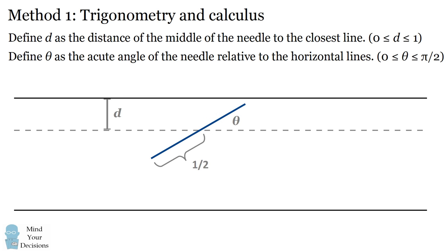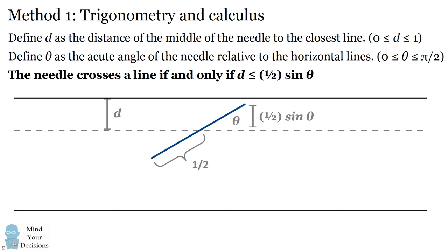We'll use a little trigonometry. Consider the vertical leg of the needle — the hypotenuse of the relevant right triangle is one half, because we have half the needle. We can compute this vertical leg as equaling one-half sine of theta. So the needle will cross the horizontal line if and only if one-half sine of theta is greater than or equal to d.